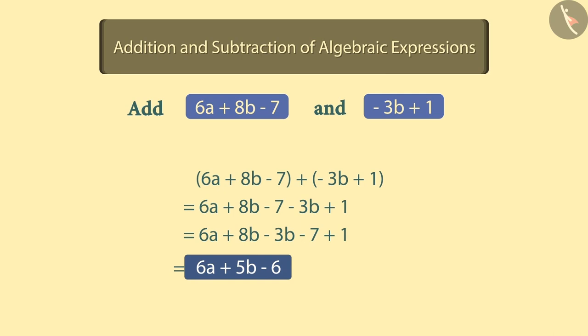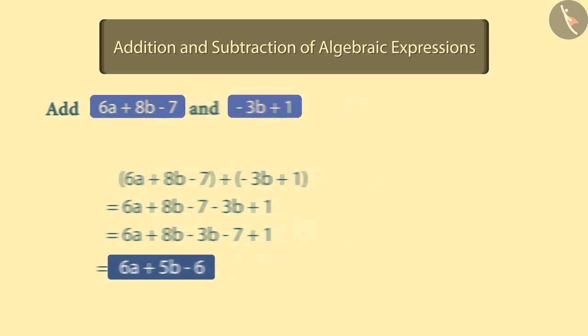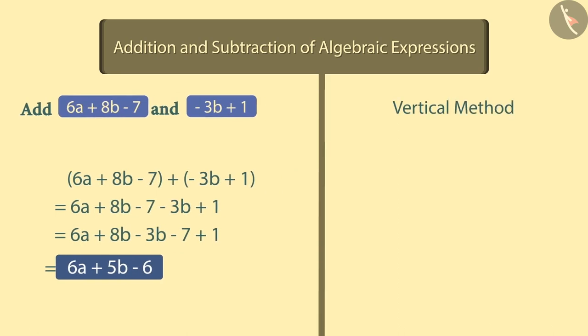We have learned another simple way to add two expressions, which is to place the expressions in vertical order. When we add the expressions in a vertical order, each expression is written in a separate line, in such a way that the like terms are stacked in a column, one under the other. And now,